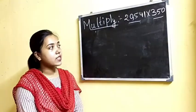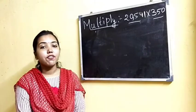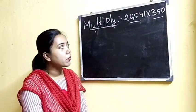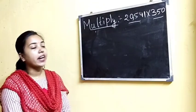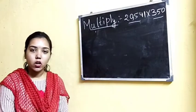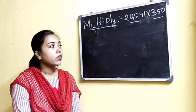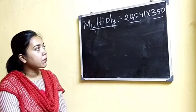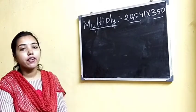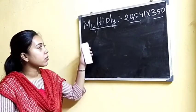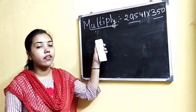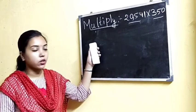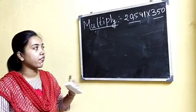Now let us start. The first step to multiply two numbers is to write them in order. You have to remember that you have to write the numbers to the right, as the multiplication proceeds to the left.